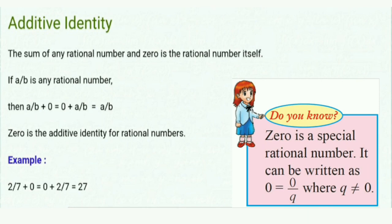Do you know? Zero is a special rational number. It can be written as 0 equals 0 upon q where q is not equal to 0. You can write 0 upon 1, 0 upon 10, 0 upon 9, 0 upon minus 6 - all equal 0. Any other number like 5 cannot be written with different denominators and still equal the same value, but with 0, it's very special.